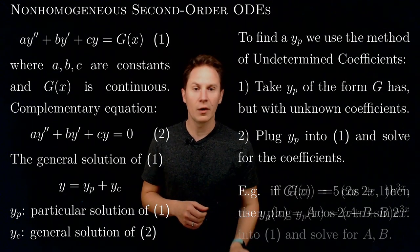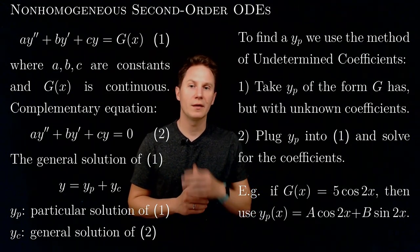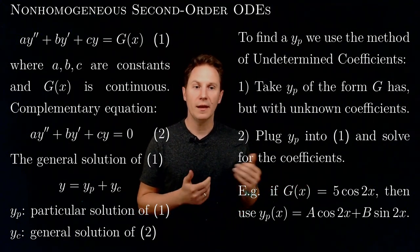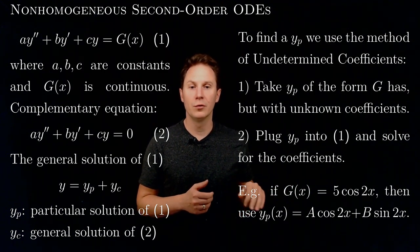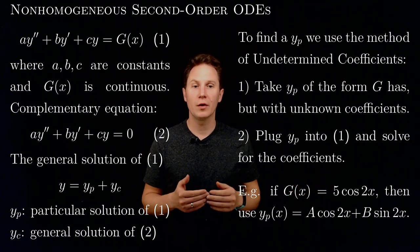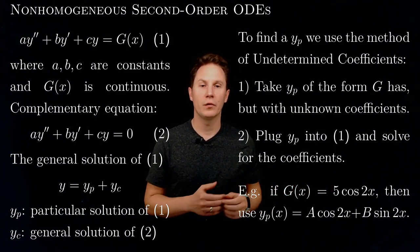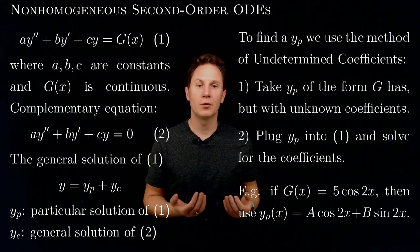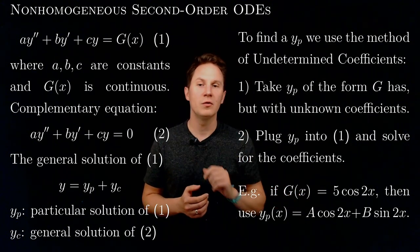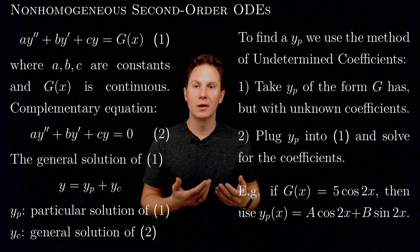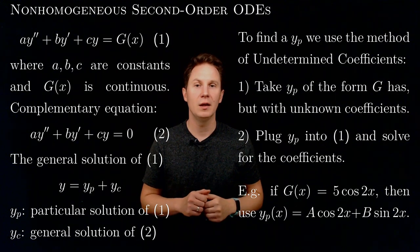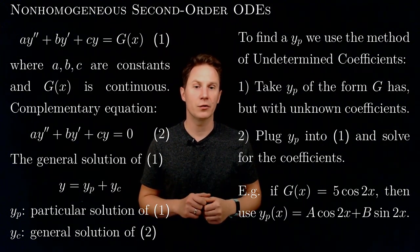As another example, g of x could be 5 times the cosine of 2x. In that case, the trial solution y sub p will be a linear combination of cosine of 2x and sine of 2x with unknown undetermined coefficients a and b. Plugging that trial solution into the non-homogeneous equation gives us relations for a and b that we can solve, thus obtaining a particular solution.